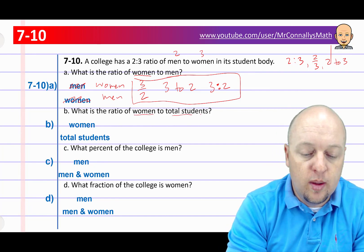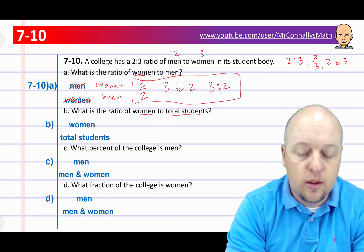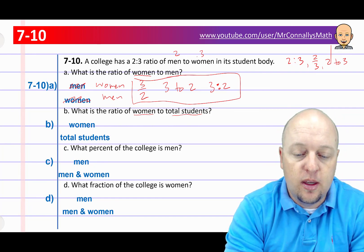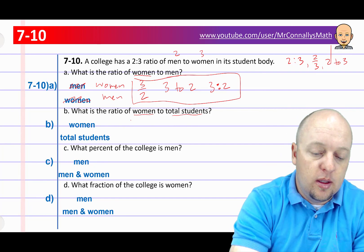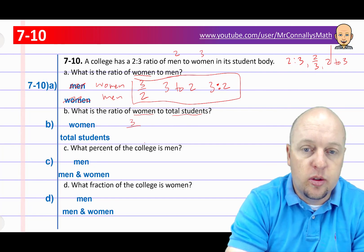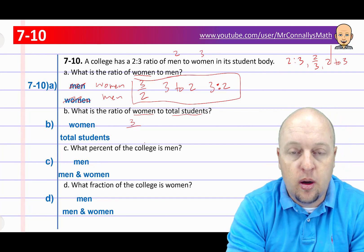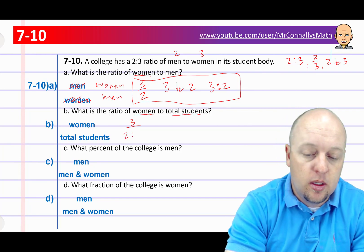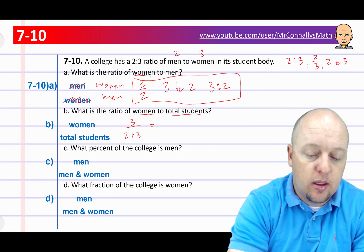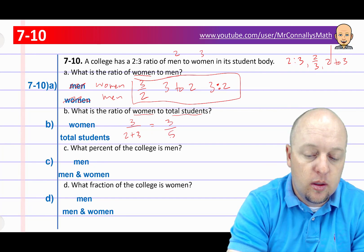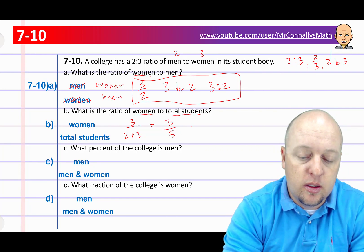Next: what is the ratio of women to total students? If men is 2 and women is 3, then women would be 3. Total students would be all students — men and women — so that would be 2 plus 3, which is 5. We can write that as 3 fifths, or we can say 3 to 5.